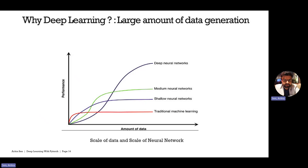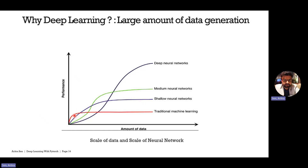Another reason for the sudden growth of deep learning is the large amount of data generation — from smart devices, mobiles, and computers — which has been growing rapidly since around 2000. If you plot model performance against amount of data, you'll see that when data is scarce, traditional machine learning models outperform deep learning models, whether shallow, medium, or deep neural networks.